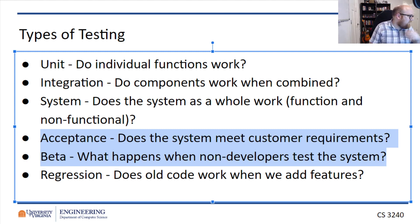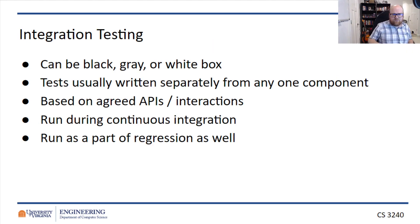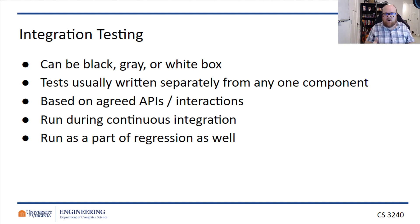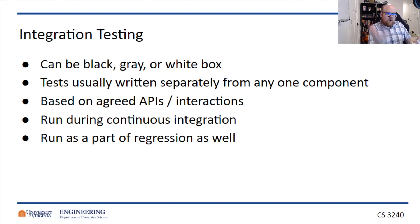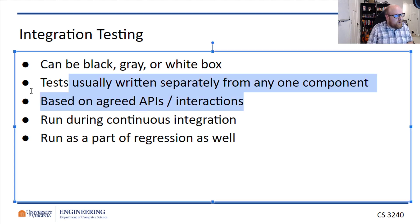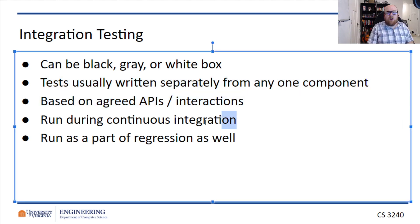Integration testing links to unit testing and can be black, gray, or white box. Tests are written separately from any one component — they're designed for how two components interact. A case where integration testing would have been valuable is the Mars Climate Orbiter: one system produced thrust in English units, and the other system received that number and assumed it was in metric units. So it under-delivered thrust, under-corrected to widen its orbit, and burnt up in the Martian atmosphere. Integration testing is based on agreed-upon APIs and interactions, and should also run during continuous integration.